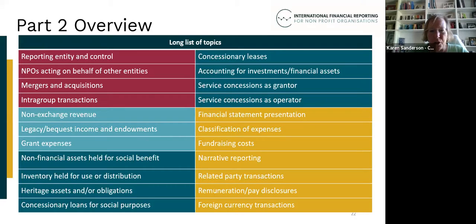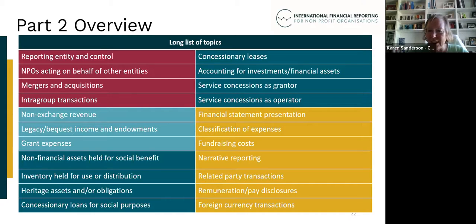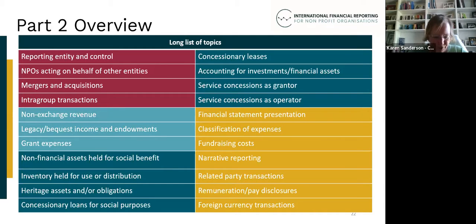If you can quickly count them, you'll see that we've got 22 issues that have been identified from our research to date. You'll also see that these are quite diverse — they range from the definition and disclosure of fundraising costs to how to account for inventory that is being held to distribute onto service recipients.